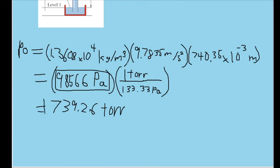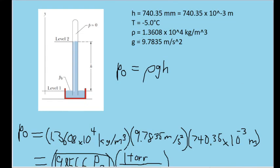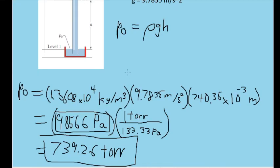And that will be our final answer. We can now see that this is slightly off from 740.35 torr, which would have been the expected value if we were in an ideal situation with 0 degrees Celsius and a value for g closer to 9.8. So this problem demonstrates the effects of using mercury at different temperatures and at different values for g.